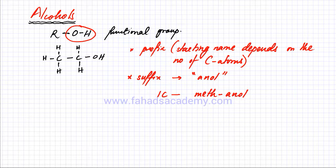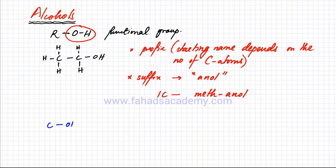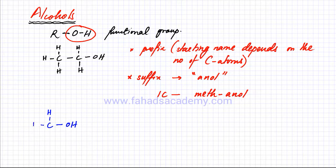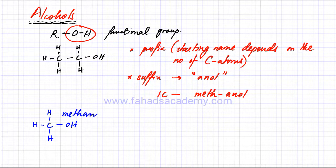So the name is going to be methanol. Let's draw methanol — it's a molecule which has one carbon atom. There's one carbon atom with an OH functional group attached to it. The carbon atom needs to make four bonds; it's already making two bonds with the OH, so there would be two more bonds with two hydrogen atoms. This is the structure of methanol.